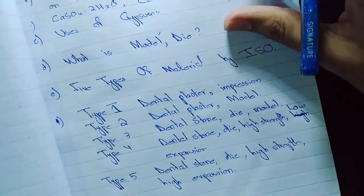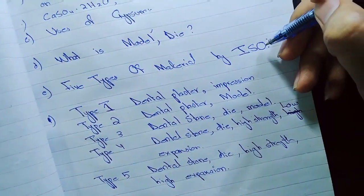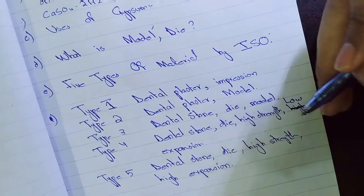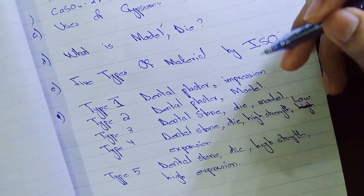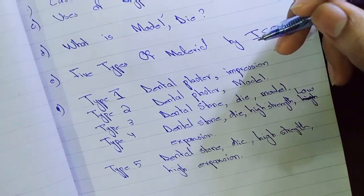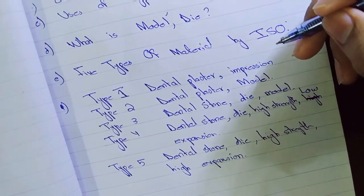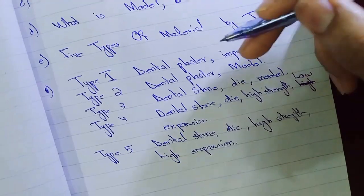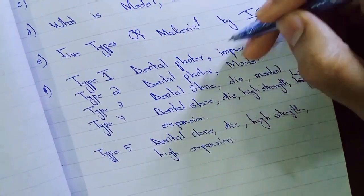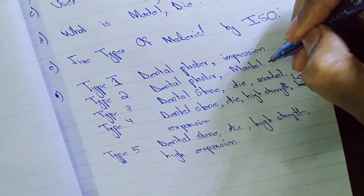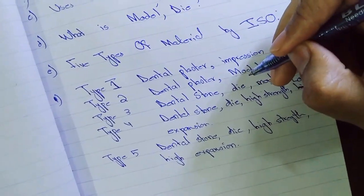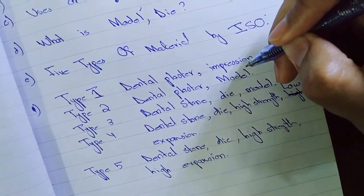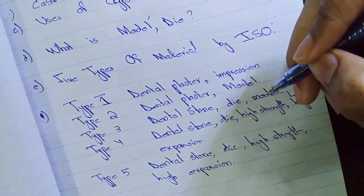Now moving on to the types given by the ISO standards. It is very important from the OSPI point of view and from the examination point of view. Whenever examiner asks and lists the types by ISO standards you have to write it as it is. Type 1 is dental plaster used for taking impression. Type 2 is dental plaster used for model preparation. Type 1 and type 2 are the derivatives of beta hemihydrate. I will tell it later in the video what is beta hemihydrate.